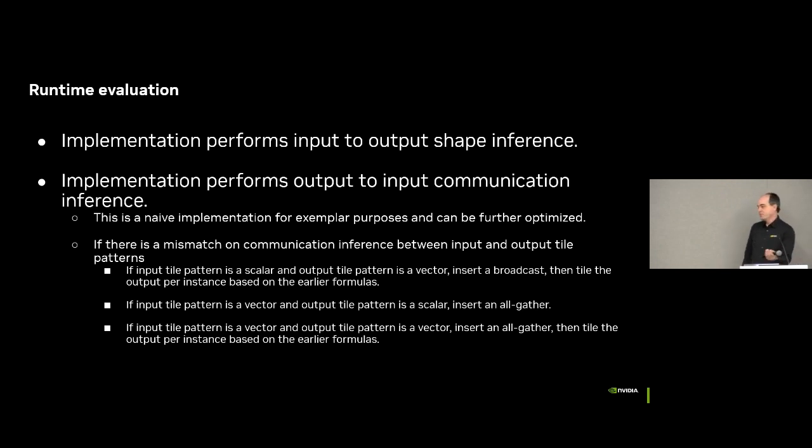This is a naive implementation just to give you something what you can do. But if it's a scalar input and a vectorized output, you just insert a broadcast on the input and then use your tiling pattern. If it's a vector input and then a scalar output, you compute everything and then you insert an all-gather operation. And if it's a vector output and a vector input, you put an all-gather on all the inputs, compute everything everywhere, and then use the tiling patterns on your outputs. Again, it's inefficient. It's not what you want to do in practice, but it functionally does work.